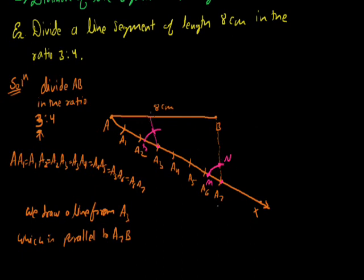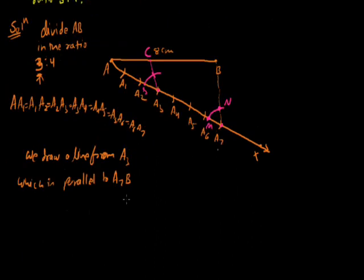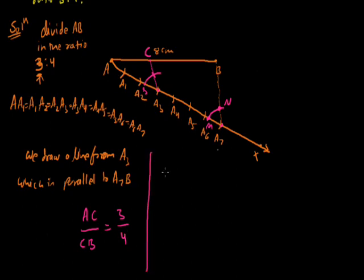The arc cuts at point C. If we measure AC and CB, their ratio will be 3:4. So in this way we can divide the given line in ratio 3 to 4. Now let's see the justification — why did it divide in 3 to 4.